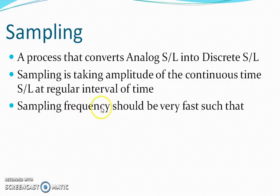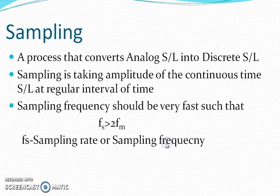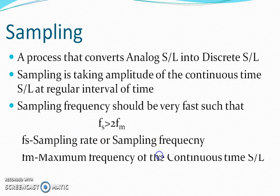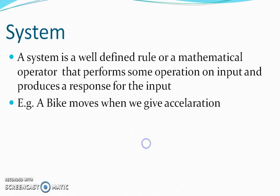The sampling frequency must be fast enough such that Fs should be greater than 2 times Fm, where Fs represents the sampling frequency and Fm represents the maximum frequency of the analog signal. Since frequency is the inverse of the time interval, the time sampling process at regular intervals should be very quick. Otherwise the signal will be lost.